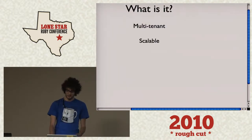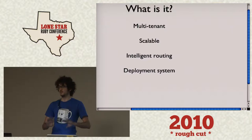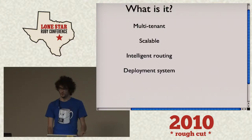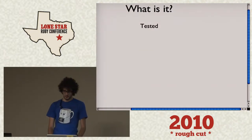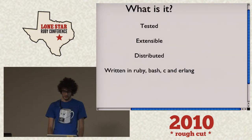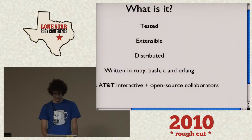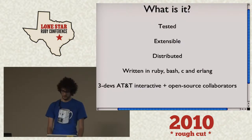It's multi-tenant, scalable, has intelligent routing. It's a deployment system — not a Ruby framework, not a Ruby library — it's a deployment system. I'm at a Ruby conference, so I should say that. It's MIT licensed and free, and open source. It's tested; we're using it in internal production at AT&T Interactive. It's extensible, distributed, written in Ruby, Bash, C, and Erlang — primarily in Erlang. There are three AT&T Interactive developers on it, as well as open source collaborators on the web, notably one guy in Argentina.